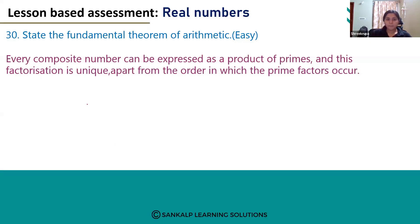So any composite number, for example 8, can be written as the product of prime numbers. If you see the prime factorization of 8, we will get 2 into 2 into 2. This is the prime factorization of 8.